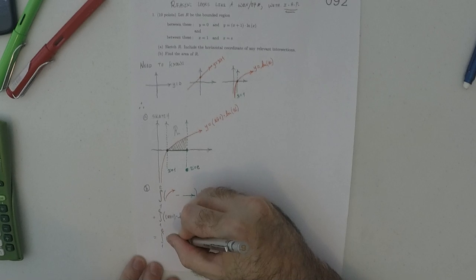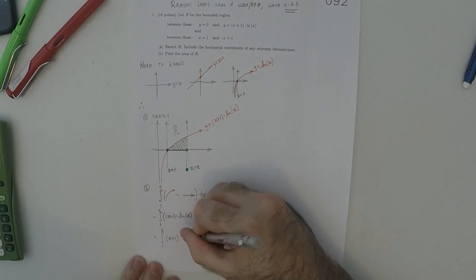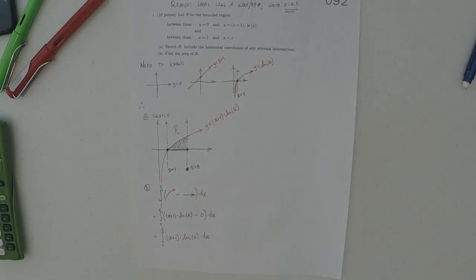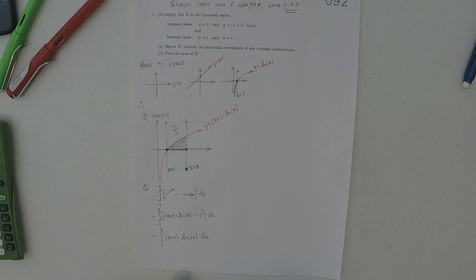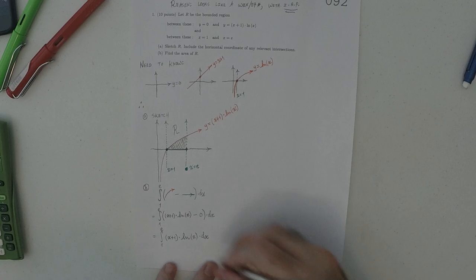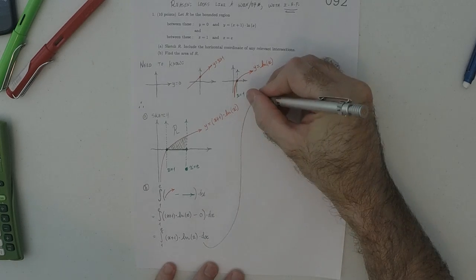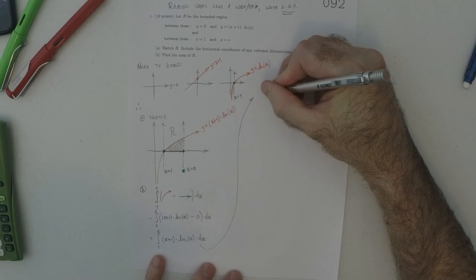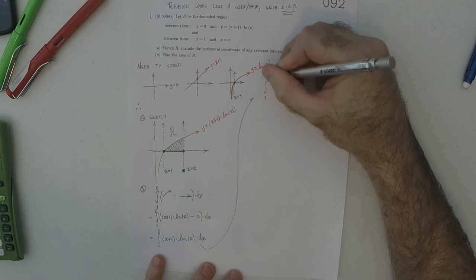So, X plus 1 logarithm X dx. Okay. So, then the point was, you know, a big part of the exercise is just getting to, could you come to the correct integral. Now, to actually evaluate this integral, we're going to need by parts. So, I'll just copy it up here so I don't have to keep pointing down there.